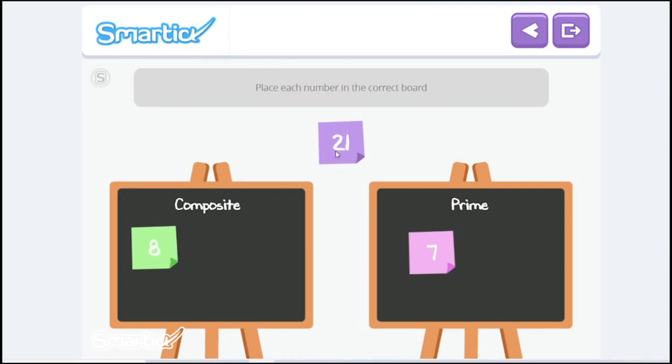Number 21. So 1 factorization is 1 and 21. I also know that 7 and 3 gives you 21. So that's at least more than one factorization. So it's a composite number.